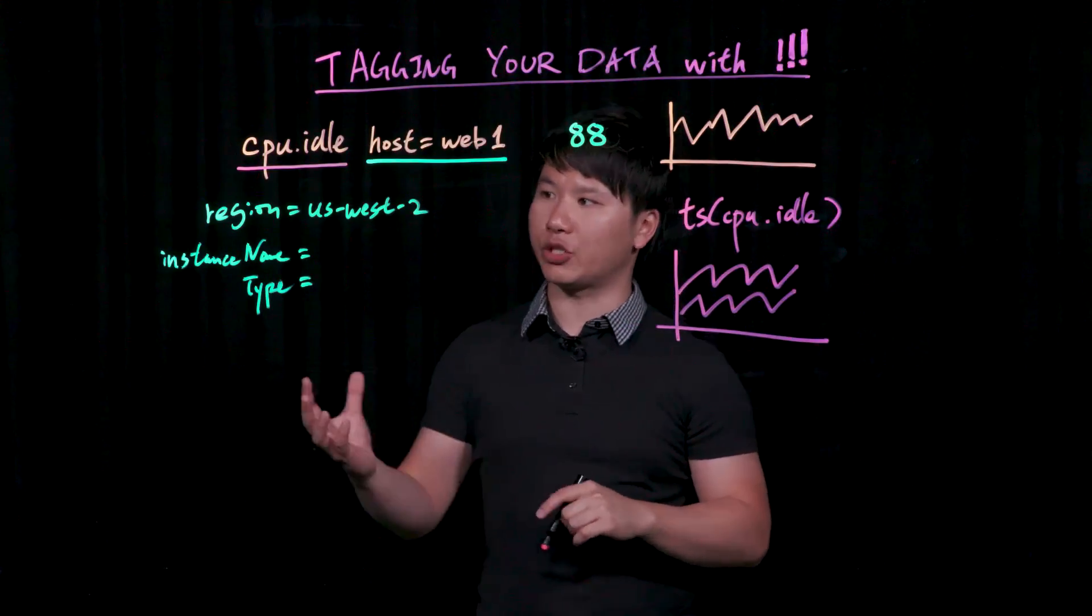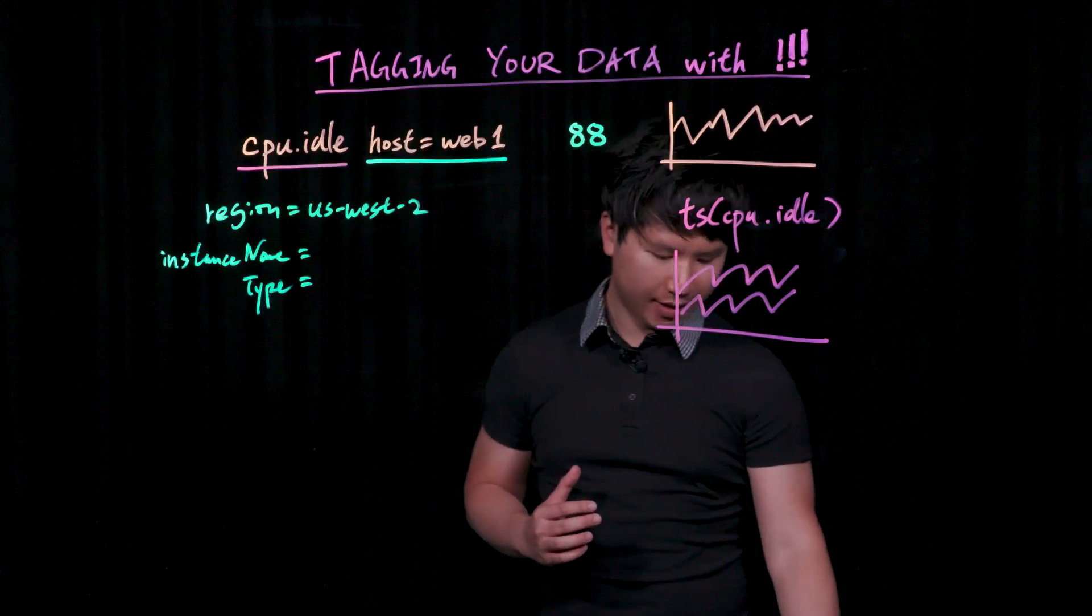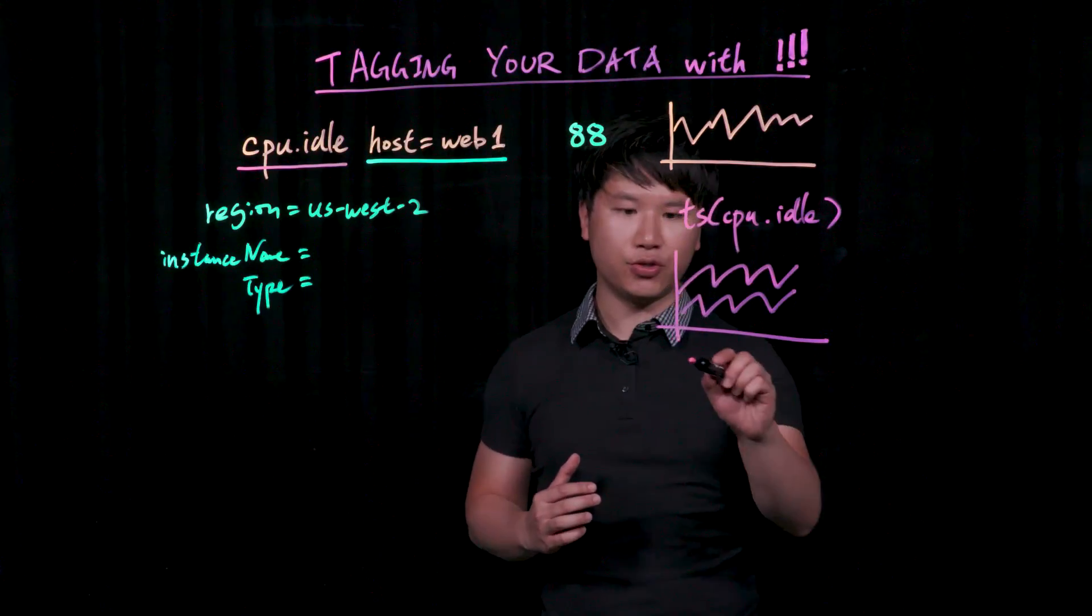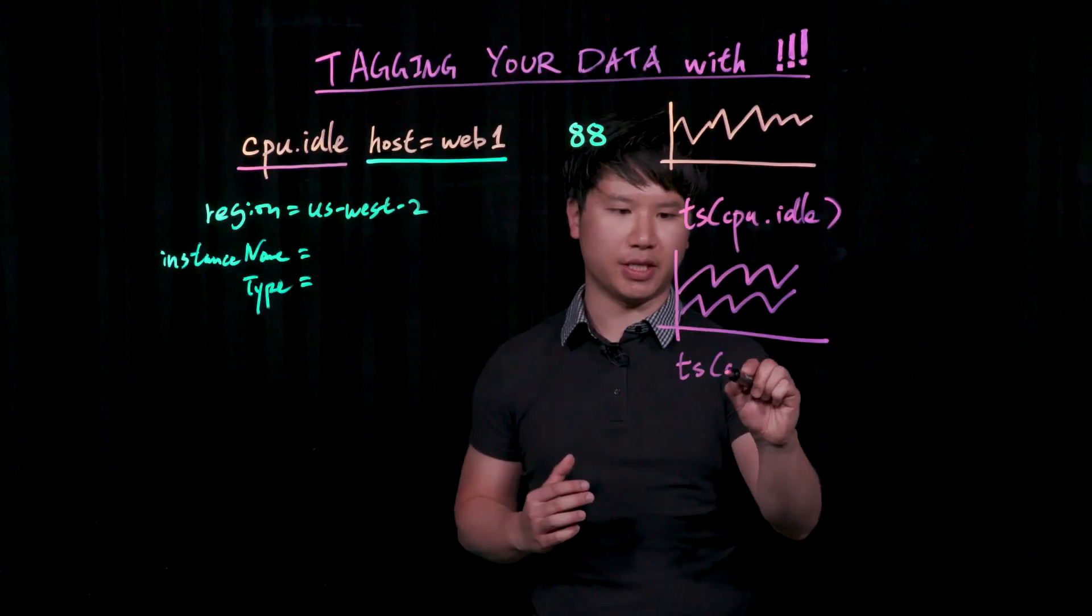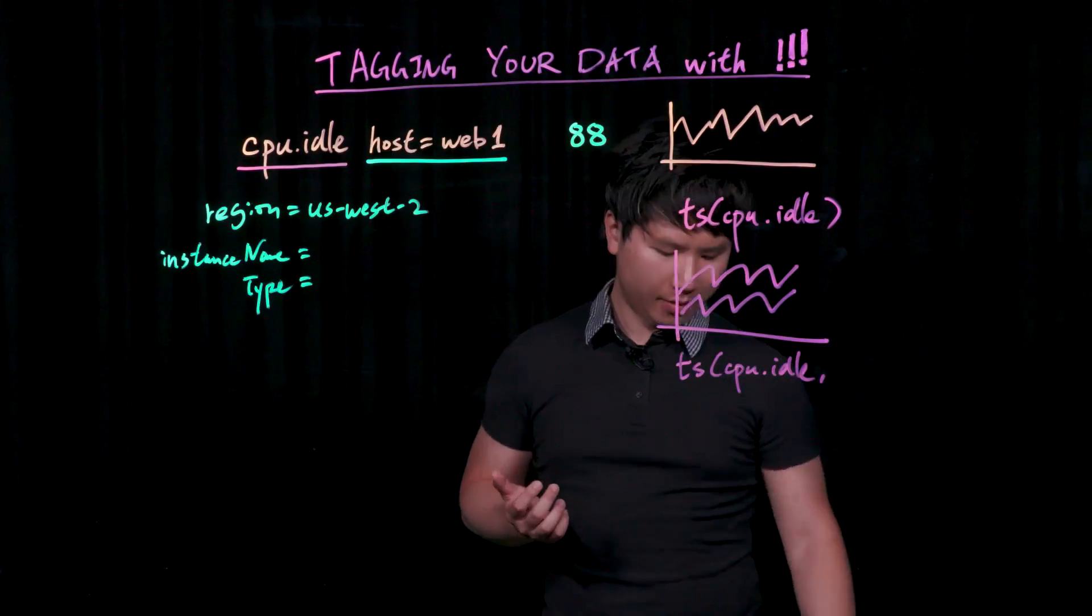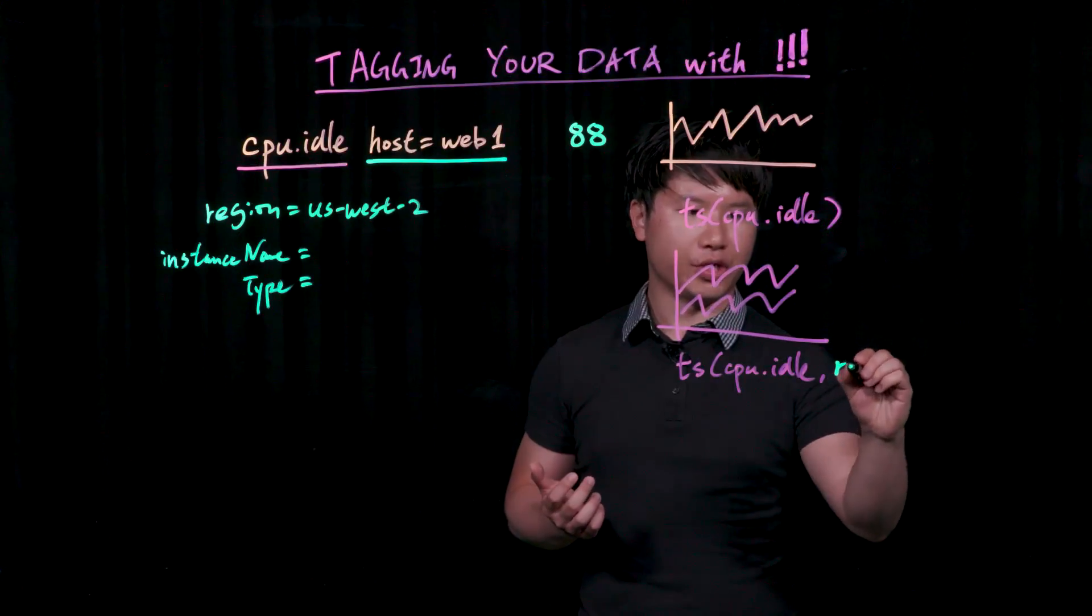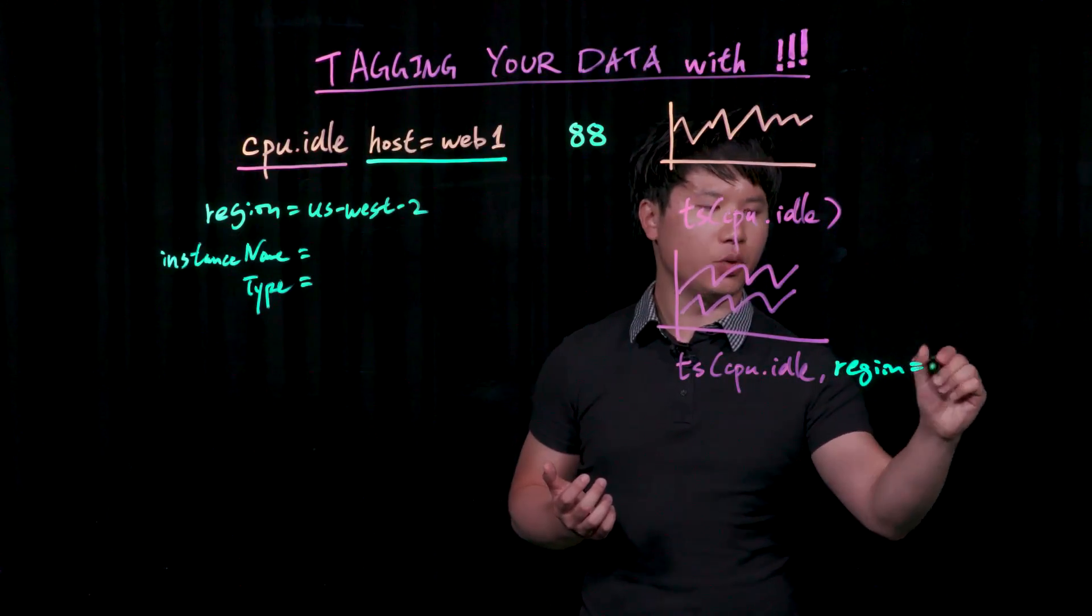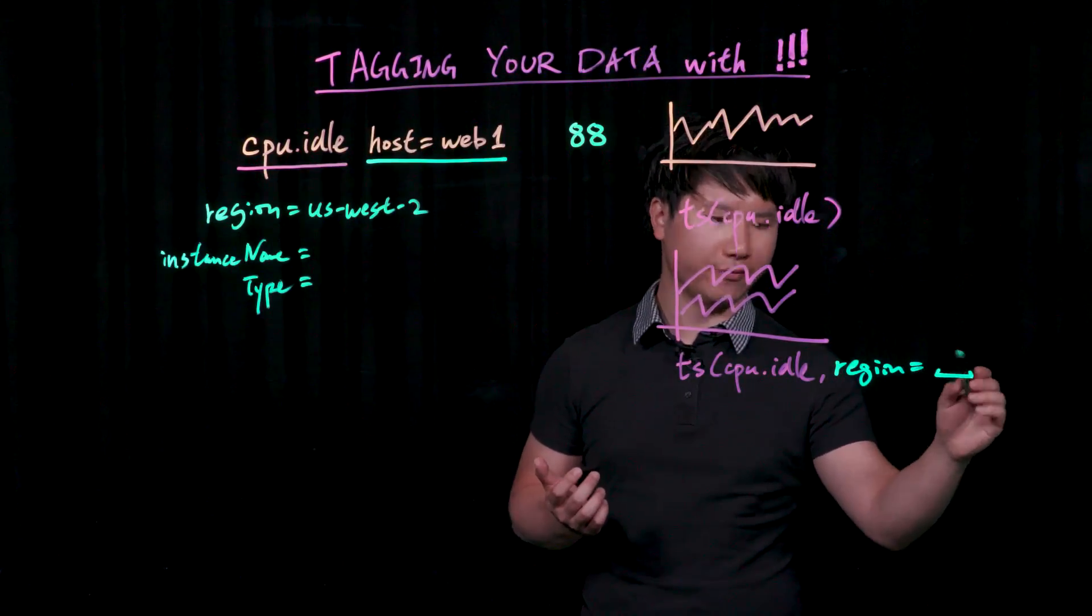Now, let's say, for example, you want to actually pull out a particular region. Now, the way to do that is still to use the TS language incantation, or you could do that with the query builder, but actually say region equals the region that you want to pull data from.